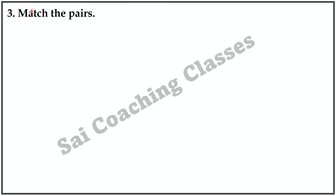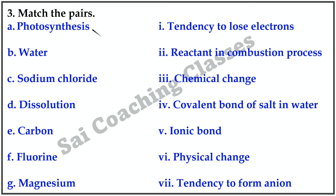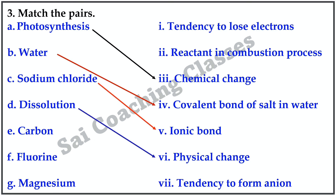Question Number 3: Match the Pairs. Photosynthesis — Chemical change; Water — Covalent bond; Salt in water — Dissolution; Sodium chloride — Ionic bond; Physical change — Carbon; Reactants in combustion process — Chlorine; Tendency to lose electron — Magnesium; Tendency to form Nil.